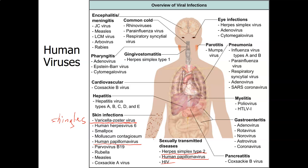Pancreatitis — inflammation of the pancreas — can be caused by a virus, Coxsackie B virus. Or it can also be caused by alcoholism, just stress to the pancreas in general somehow. But chronic alcoholism is a common cause of pancreatitis.